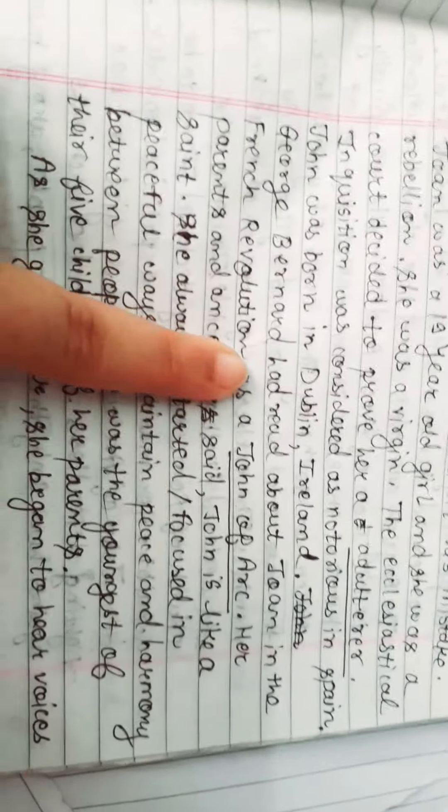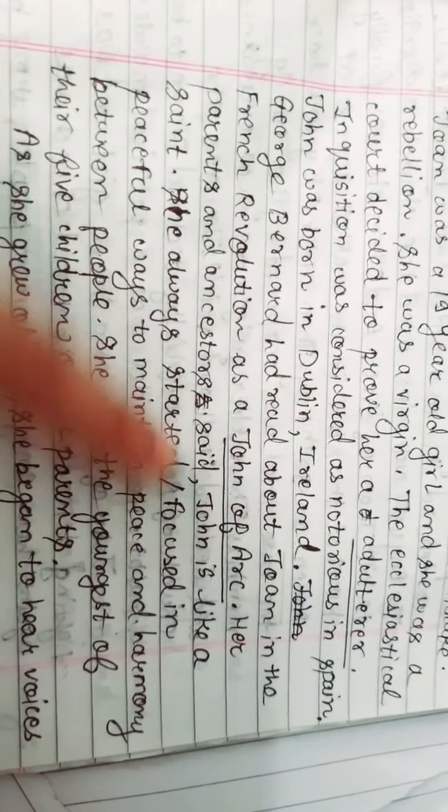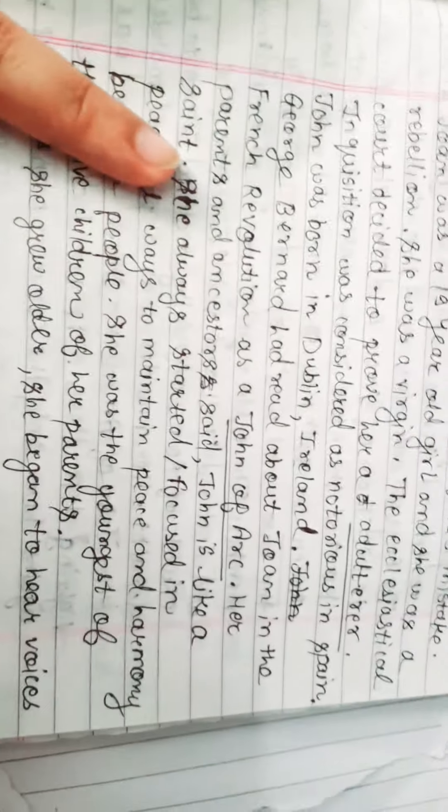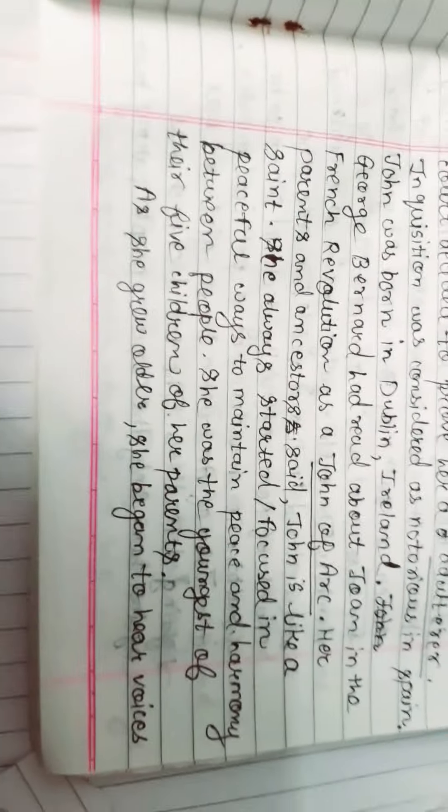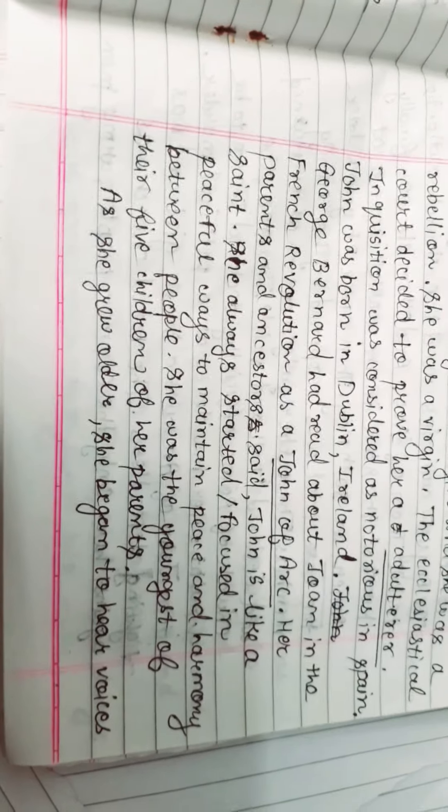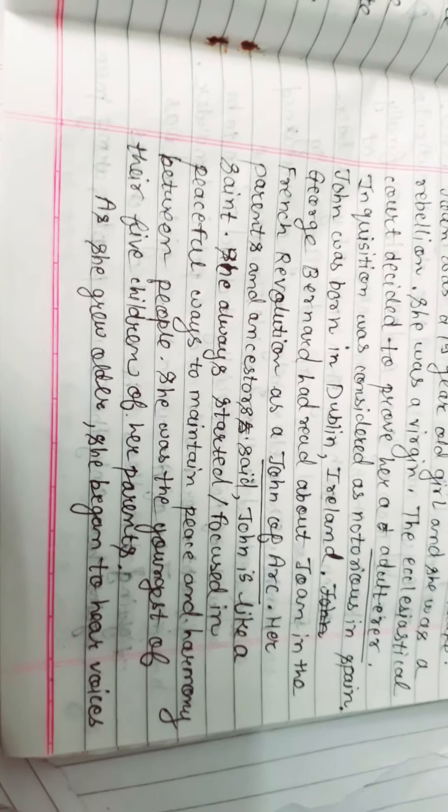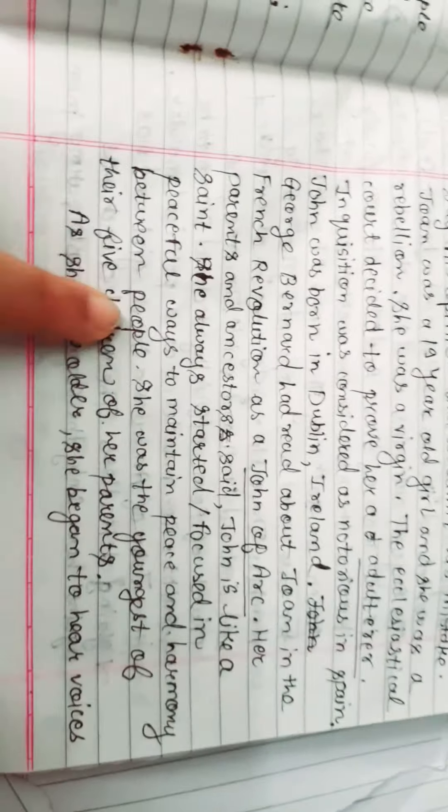George Bernard had heard about Joan in the French Revolution as the Joan of Arc. Saint John was popularly known as Joan of Arc. Her parents and ancestors said that Joan was like a saint. She always started and focused in peaceful ways to maintain peace and harmony between the people.